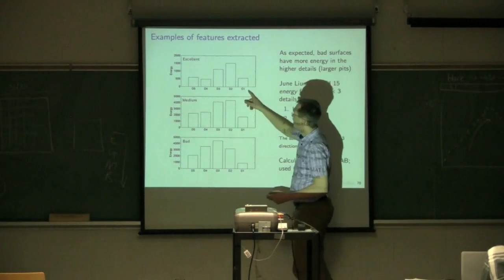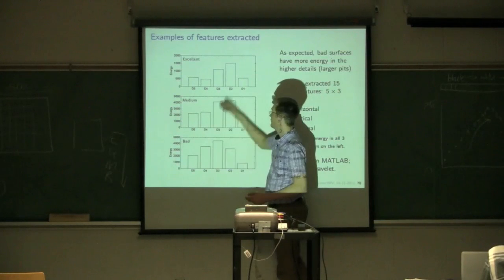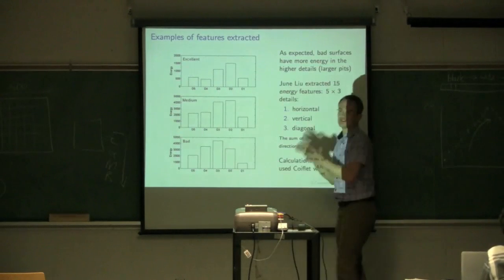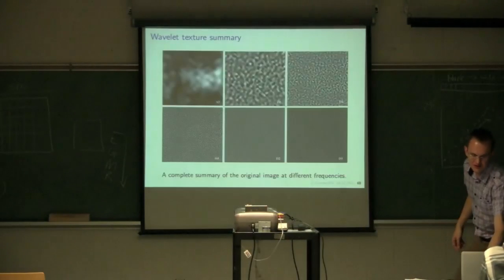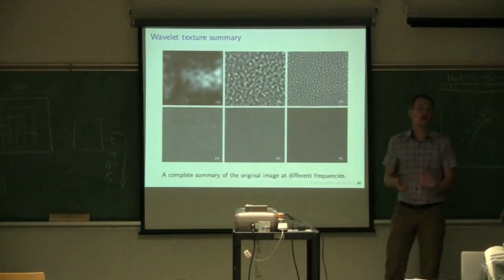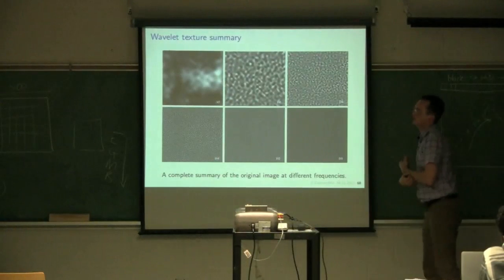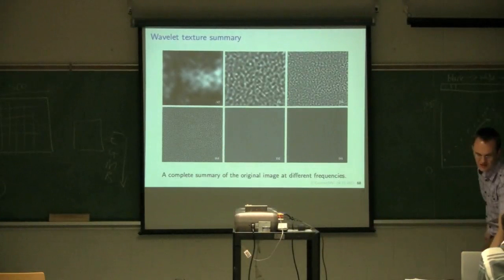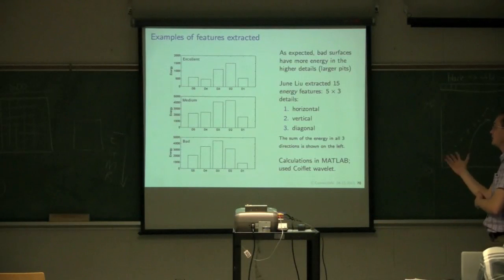What you can see here is this distribution of energy shifts. As you go from excellent images to bad quality steel surfaces, you're going to higher and higher D levels. That makes absolute sense. As we go to higher and higher D levels, our frequency information is getting from high frequency, medium frequency, to lower and lower frequencies. And so, that's a good feature to extract.